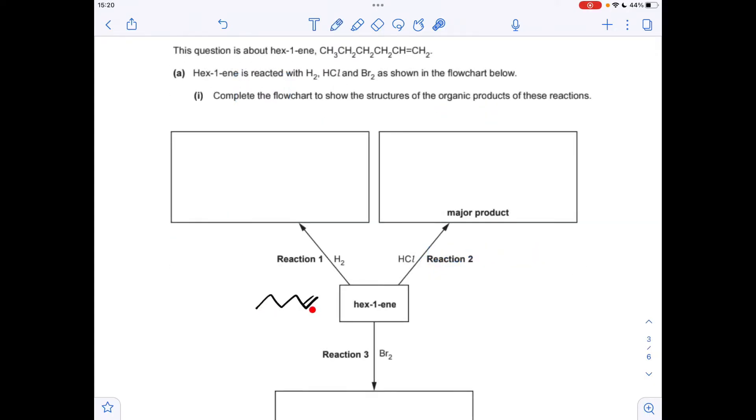Moving on to the flow chart now, I've drawn up the skeletal formula for hex-1-ene to help explain this. So reaction 1, reacting with hydrogen, we're just going to break that double bond and turn that into an alkane essentially. The product is hexane.